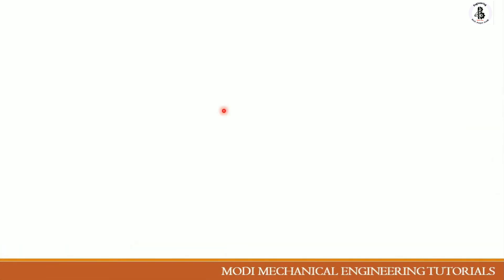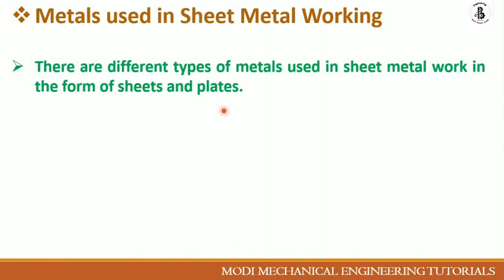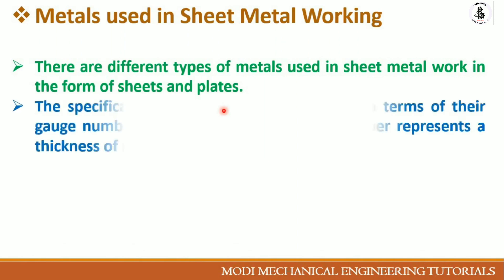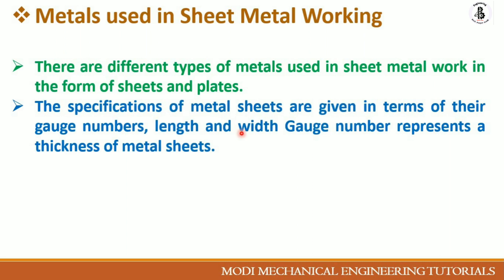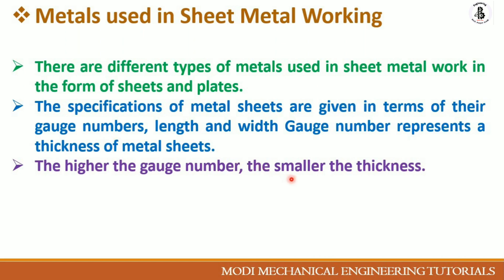In sheet metal working, different types of metals are used in the form of sheets or plates — basically two forms of raw material. The specifications of metal sheets are given in terms of their gauge number, length, and width. Gauge number represents the thickness of the sheet. The higher the gauge number, the smaller the thickness — this is the basic relation between gauge number and sheet metal thickness.